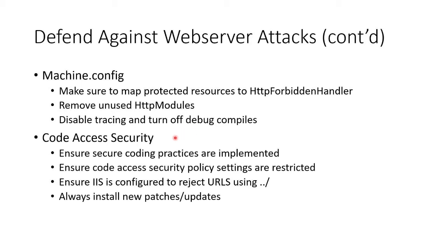In your code, include access security. Use secure coding practices — go to OWASP, they'll help you. Ensure that you code access security policy settings and make sure those policy settings are restricted. Ensure that IIS is configured to reject directory traversal — that dot-dot-slash pattern. Always install new patches and updates.